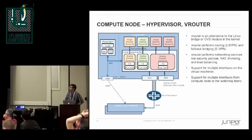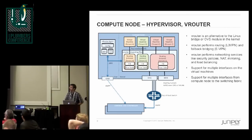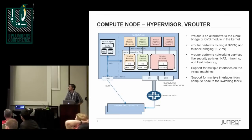There is a receive handler that in 3.x kernels you can define, and we trap packets using that. In older versions there is a bridge hook that we tap into — that's how packets enter the kernel module. From the tap interface, there is a handler you can hijack for the tap interface, and that's how they enter the vRouter.